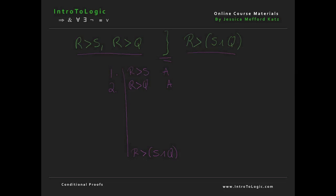Now we ask ourselves: is there anything we can do with lines 1 and 2 to derive this conclusion? Without conditional proof, the answer appears to be no given our available rules. Another way to tackle this problem is to ask: is our conclusion a conditional? In fact it is — we have if R then S and Q — so we can try to use conditional proof to derive it. Of course, if our conclusion weren't a conditional, we couldn't look to conditional proof to bring about the conclusion.